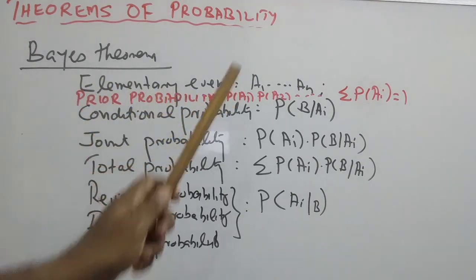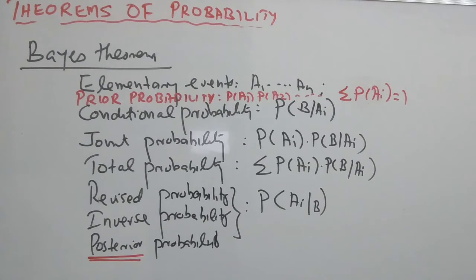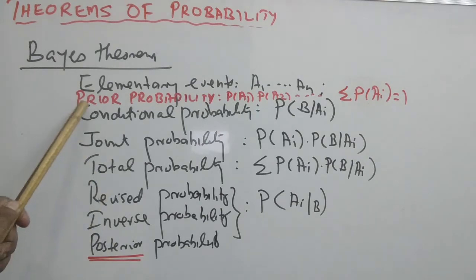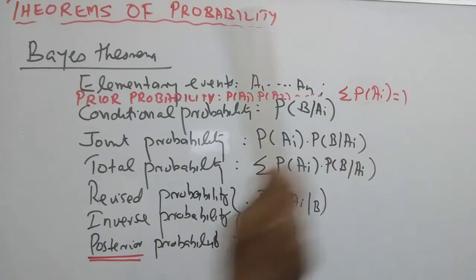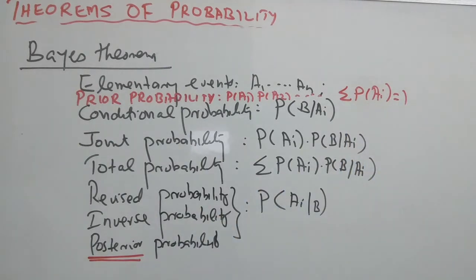Event B cannot occur independently; it occurs only in association with A1, A2, or An. The probability of B occurring is: P of A1 B plus P of A2 B plus ... plus P of An B, which by the multiplication theorem equals the sum of P of Ai multiplied by P of B given Ai. All these components — P of Ai and P of B given Ai — are known from past experience.